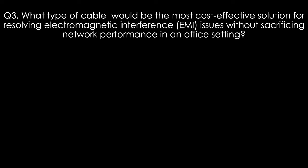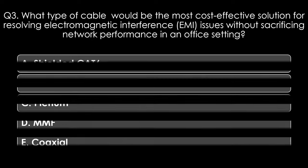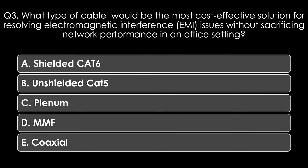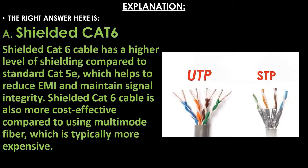Question three. What type of cable would be the most cost-effective solution for resolving electromagnetic interference issues without sacrificing network performance in an office setting? Options: shielded Cat-6, unshielded Cat-5, plenum, MMF, or coaxial. The right answer is shielded Cat-6. Shielded Cat-6 has a higher level of shielding compared to standard Cat-5e, which helps reduce EMI and maintain signal integrity, and it is more cost-effective than multi-mode fiber. UTP stands for unshielded twisted pair and STP stands for shielded twisted pair.